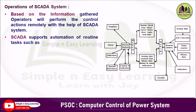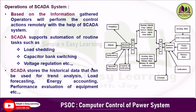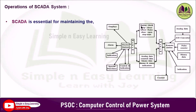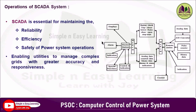SCADA supports automation of routine tasks such as load shedding, capacitor bank switching, and voltage regulation. These can be done automatically without human operators. After monitoring and control operations take place, SCADA stores historical data that can be used for trend analysis, load forecasting, energy accounting, and performance evaluation of equipment. This improves operational efficiency and system stability. SCADA is essential for maintaining the reliability, efficiency, and safety of power system operations, enabling utilities to manage complex grids with greater accuracy and responsiveness.